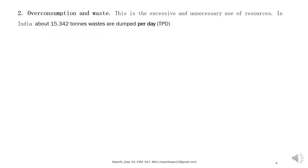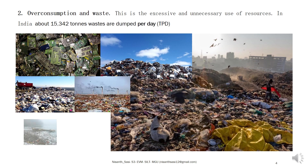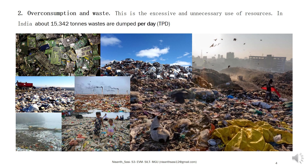The next cause is overconsumption and waste — the excessive and unnecessary use of resources. In India, about 15,342 tons of waste are dumped per day. Overconsumption of resources like water and petrol is also unnecessary. When we use and waste these resources, they become depleted. Examples of waste include food waste and electronic waste.